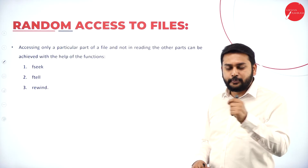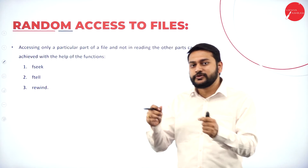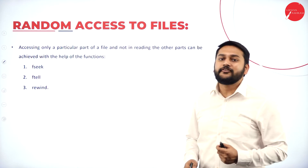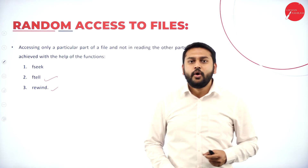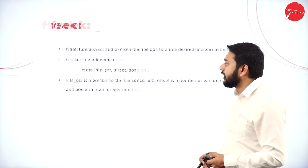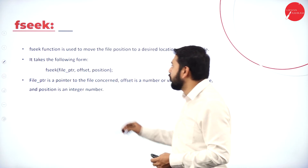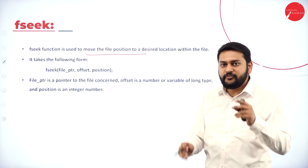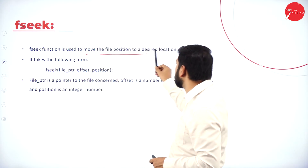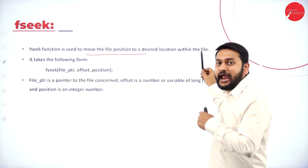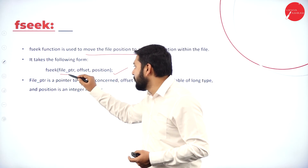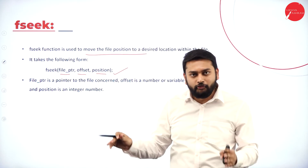Now for some important predefined functions for file operations. The first is fseek, which is used to move the file position to a desired location within the file. The syntax requires you to specify the file pointer, an offset, and the position from which to move the file pointer to the desired location.